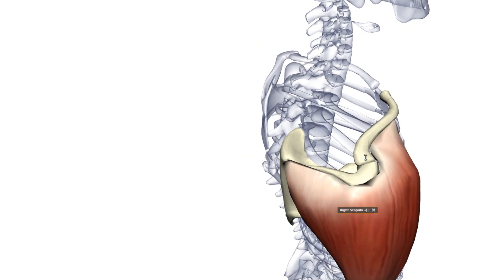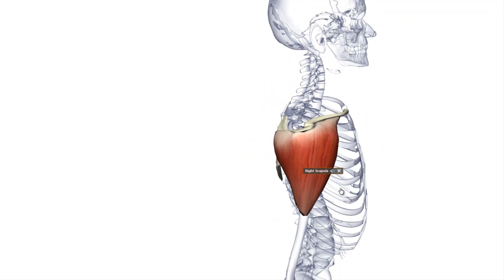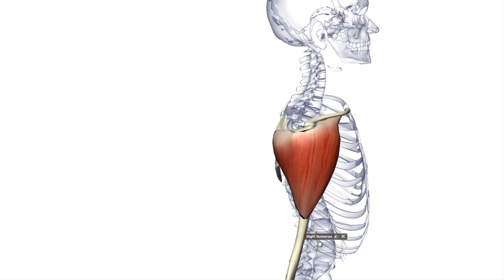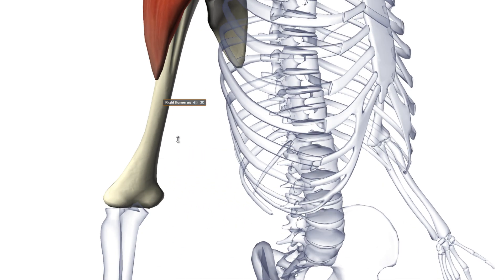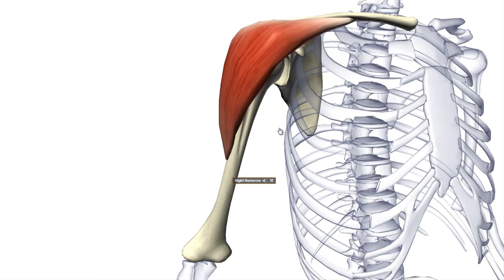The insertion of this muscle is the deltoid tuberosity of the humerus. This bone is the humerus. The muscle is innervated by the axillary nerve.